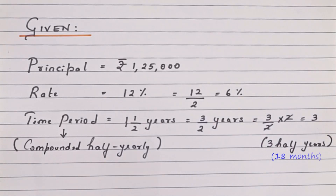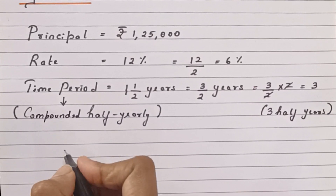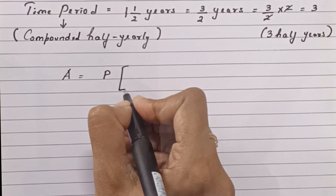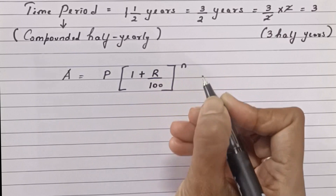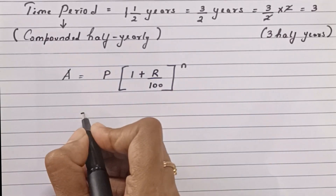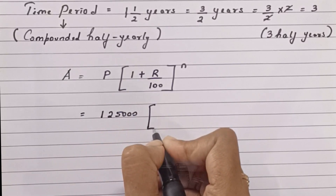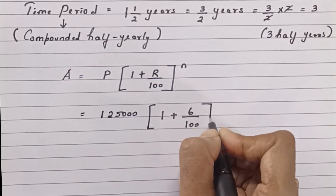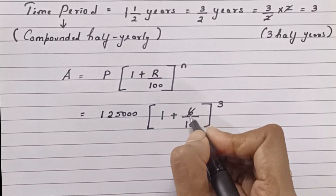3 half years meaning 18 months. Once the rate and time period are converted, we substitute into the formula: Amount = Principal × (1 + r/100)^n. On substituting, we have 1,25,000 × (1 + 6/100)^3. We can reduce 6/100 to 3/50.